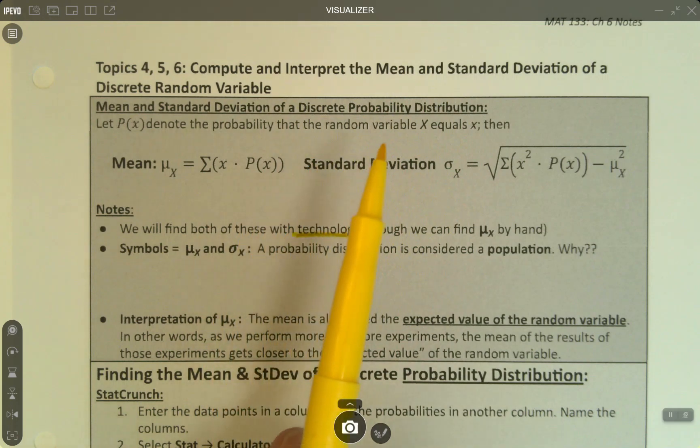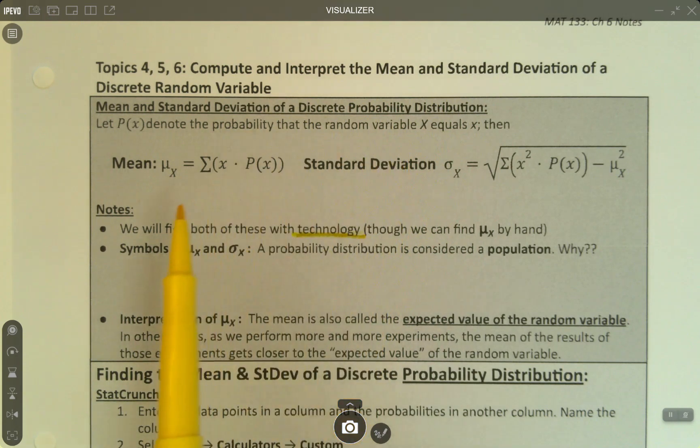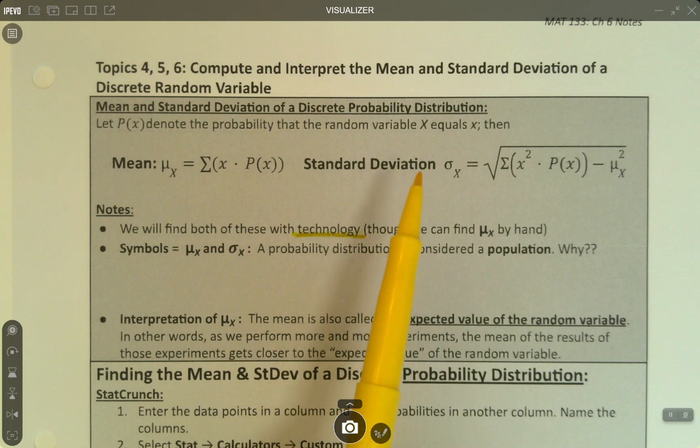Now that we know what a discrete probability distribution is and how to figure out whether one is valid or not, we want to be able to find the mean and the standard deviation of those distributions.